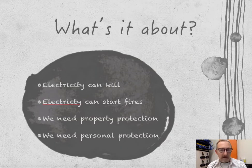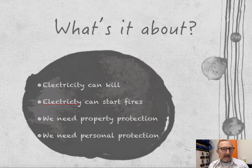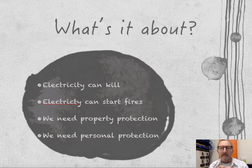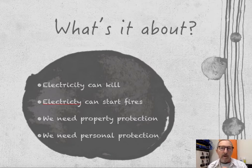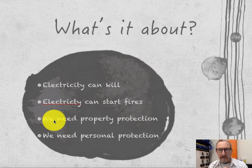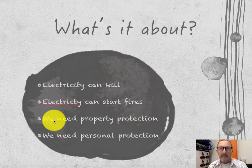Electricity can kill. Electricity is very dangerous. Electricity can also start fires. If wires are overheated in a building cavity such as a wall, the wires will get very hot — especially where they're near timber studs or other flammable material — and they can easily start a fire. So we need some way to automatically stop the current in that circuit in the event that the wires get too hot. We need property protection, and we do that with circuit breakers.